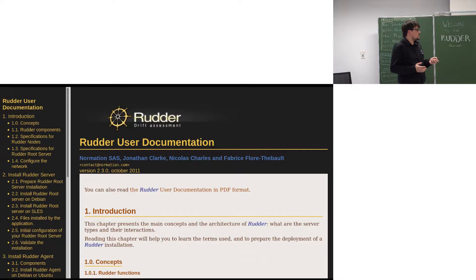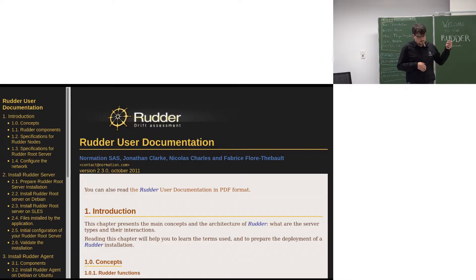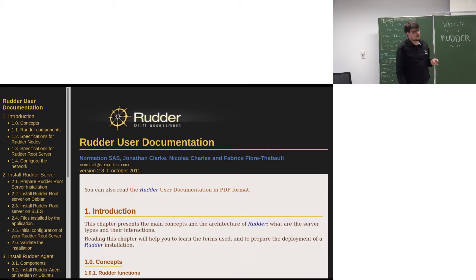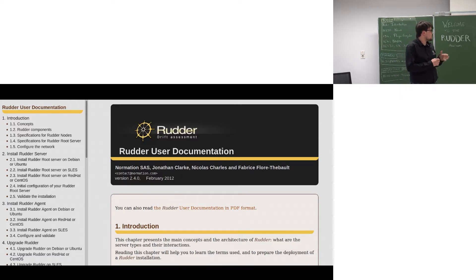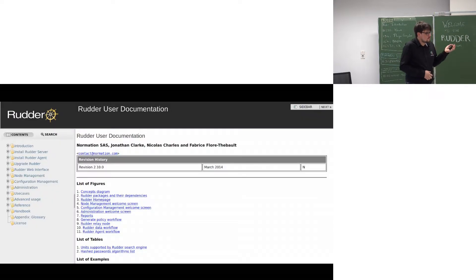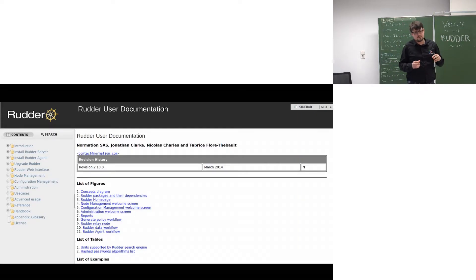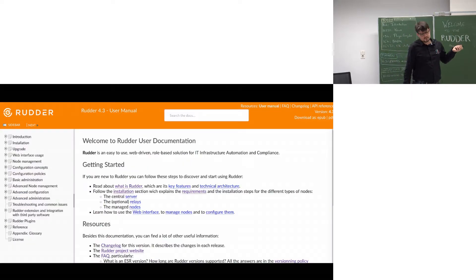Another big change was documentation — a complicated topic for Rudder. Starting with the first Rudder documentation released with Rudder 2.3, it was a single-page doc containing the usual installation steps and interface description. It did the job pretty well, though aesthetically questionable. As we continued developing it, the one-page doc grew very long, so we decided to start splitting it.